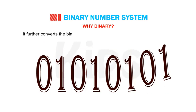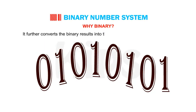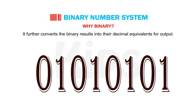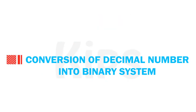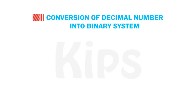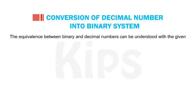The computer further converts the binary results into their decimal equivalents for output. Now let us find out how a decimal number is converted into the binary system. The equivalence between binary and decimal numbers can be understood with the given examples.